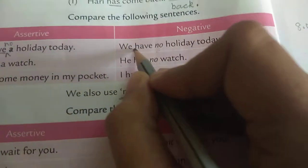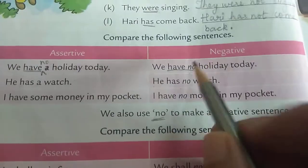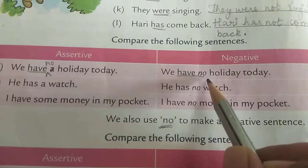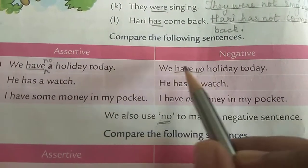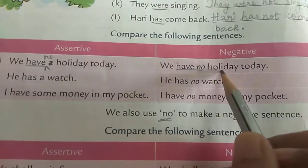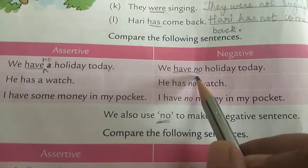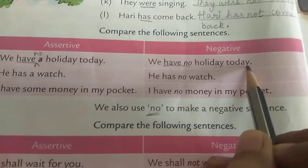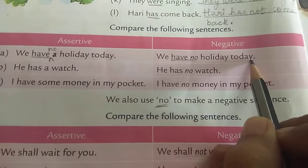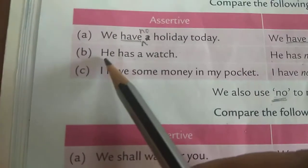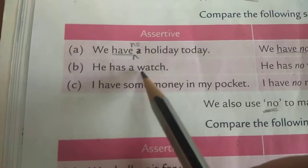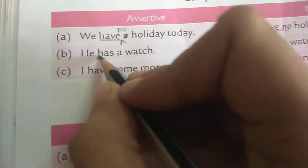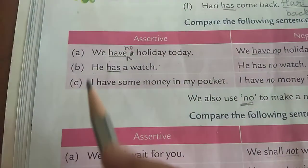Before 'holiday', the article 'a' was there. When we change the sentence into negative, we remove that 'a': 'We have no holiday today.' Now let's see the second sentence: 'He has a watch.' The helping verb here is 'has.'